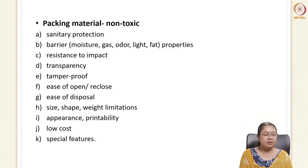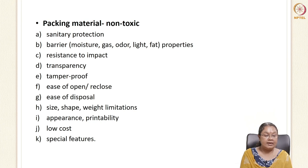Packaging materials generally need to be non-toxic; they should not react with food or interact with the contents of the food, and should not form any toxic materials. They should also have very good barrier properties — they should not let any moisture enter from the environment to the food or from the food to the environment, and similarly should not pass odor, light, gas, or oil. They should have good barrier properties and protect the content inside, providing sanitary protection and resisting impact during transportation and handling.